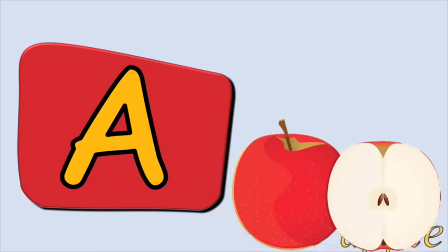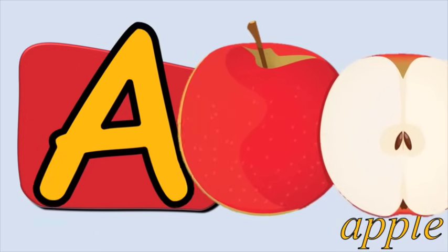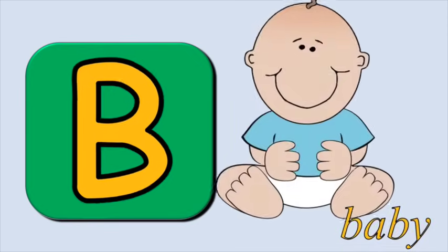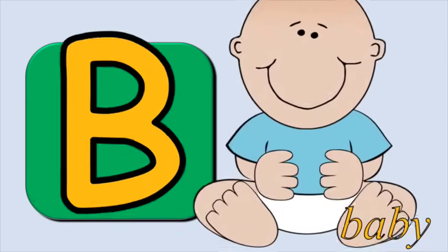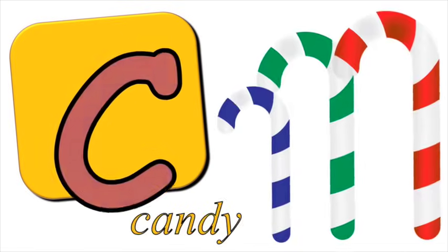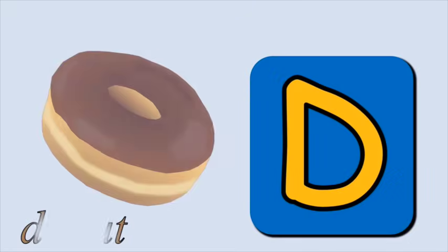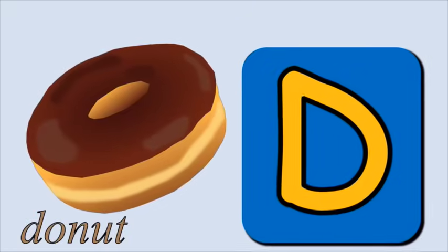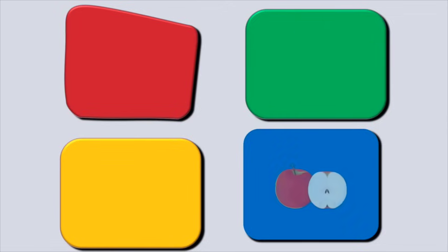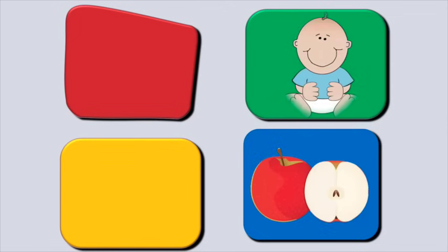A is for apple, a, apple. B is for baby, b, baby. C is for candy, c, candy. D is for donut, d, donut. These are the words from the alphabets.